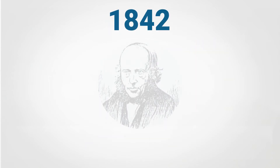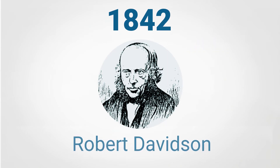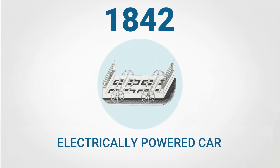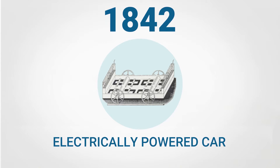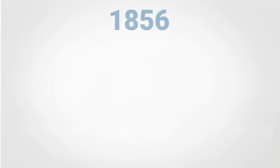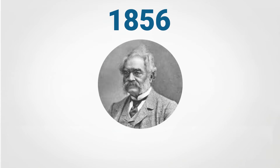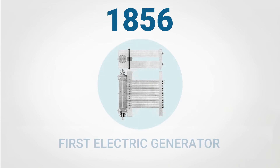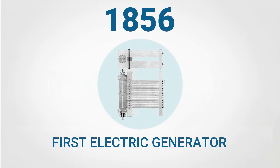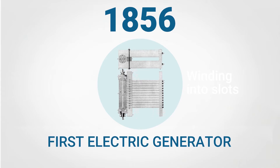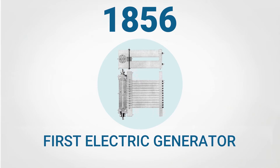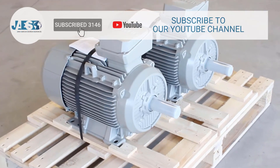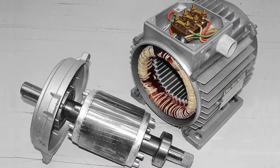In 1842, Robert Davidson manages the construction of the first electrically powered car. Its engines make about one horsepower and reach a speed of four miles per hour. In 1856, Werner Siemens built an electric generator with a double T armature winding. He's the first one to place a winding into slots. This invention marks a turning point in the design of electrical machines. Today, almost all electrical motors are built with windings and slots.